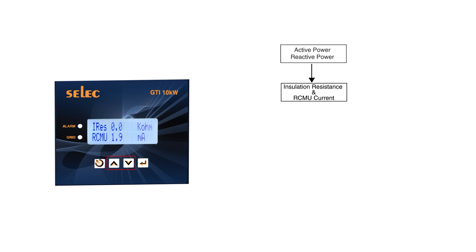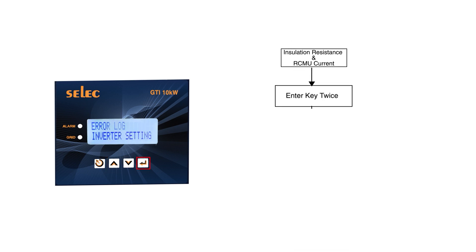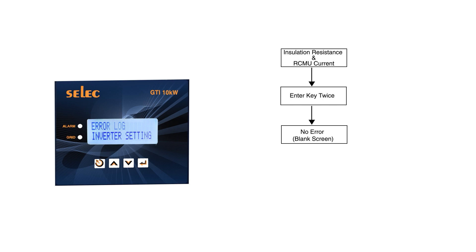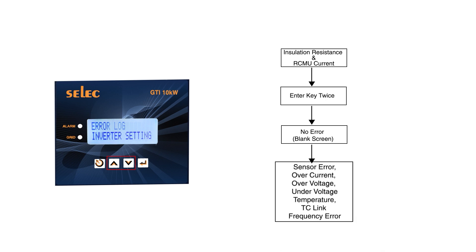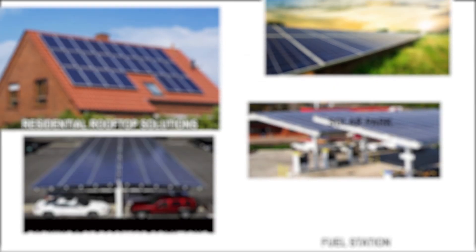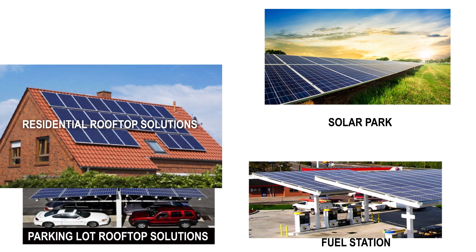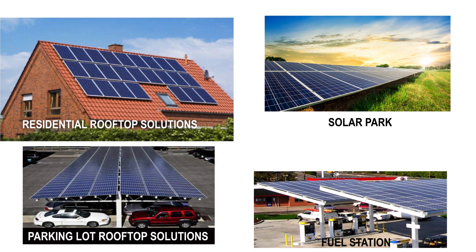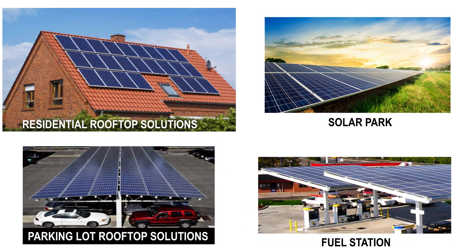Pressing the Down key shows insulation resistance and RCMU current. Use the Up and Down keys to navigate. To check errors, press the Enter key twice — if there are no errors, the screen will be blank. Use the Up and Down buttons to scroll through errors such as ADC sensor error, over current, over voltage, under voltage, temperature, DC link, and frequency error. The inverter can store up to the last 20 errors. Applications include residential rooftop solutions, solar park, parking lot rooftop solutions, and fuel stations.